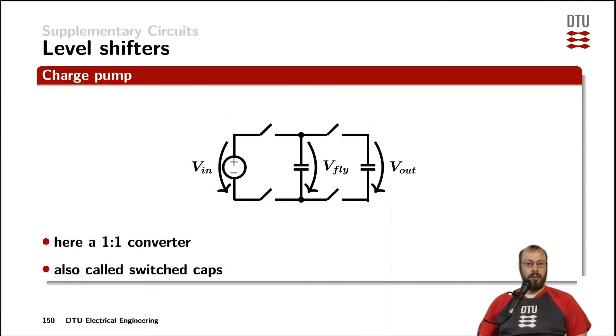Another way to generate the floating supply voltage for a high side driver is through a charge pump. The output voltage from a charge pump here is generated through an intermediate voltage from the flying capacitor. The one I'm showing here on the slide is a one-to-one converter, but you can also do one-to-two or two-to-one converters, which represents the voltage gain of the circuit.